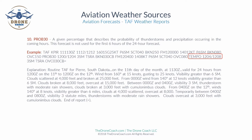Then we have a TEMPO — temporarily — between 0400 Zulu and 0800 Zulu on the 12th: visibility three statute miles, thunderstorms with rain showers, and overcast at 3,000 feet with cumulonimbus clouds. The equal sign at the end of the report just means that's the end of the report.